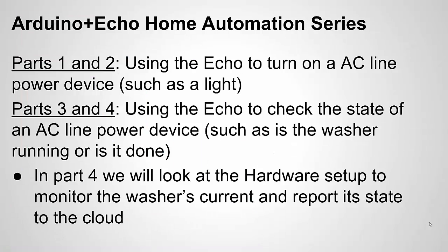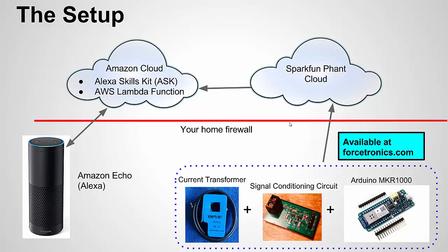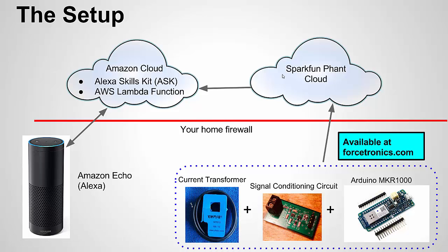If you've been watching this series, you know in parts one and two we looked at how to use the Echo to control a home appliance or device — we used a light as an example. Then in part three we started setting up the Echo to monitor the state of our washer, so we know when it's done. We can ask Alexa if the washer is running or done. In part four we're going to look at the hardware setup, the Arduino, the measurement circuit, and the current transformer, as well as the code to communicate the washer state to the Phant cloud. As a reminder, in part three we talked a lot about the Echo, AWS, and the SparkFun Phant cloud, and we sent some simulated data.